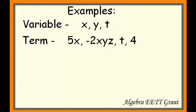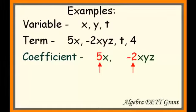x, y, z, t, or 4. Now a coefficient is the number that's placed in front of either one variable or a set of variables, that monomial term. So the coefficients in these cases would be 5 and negative 2.